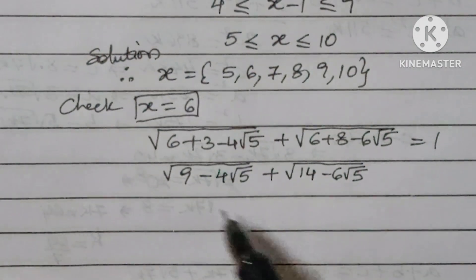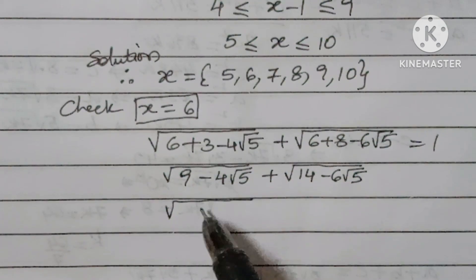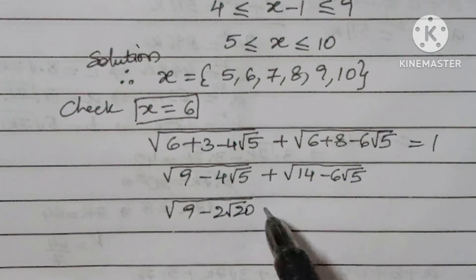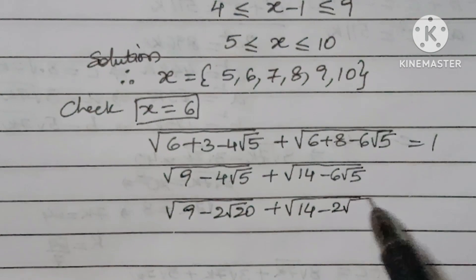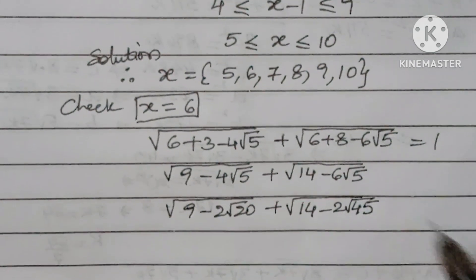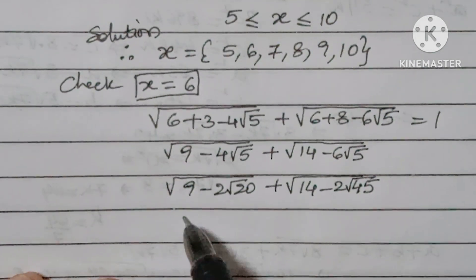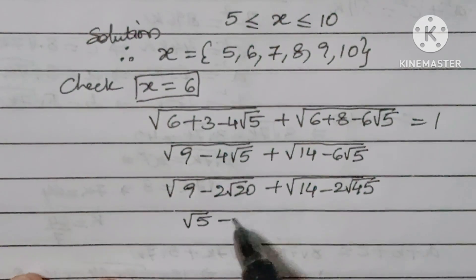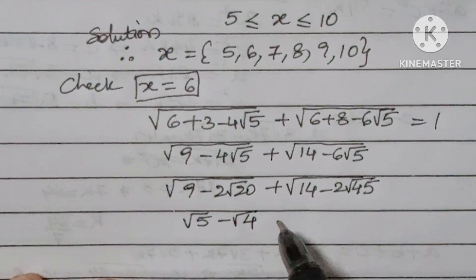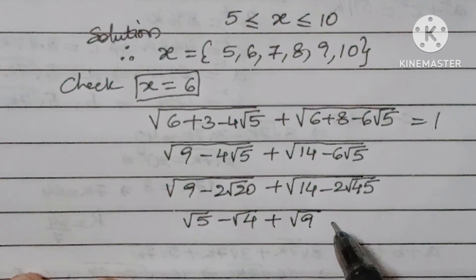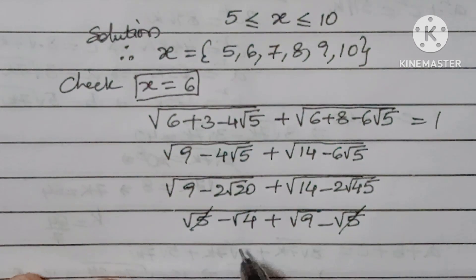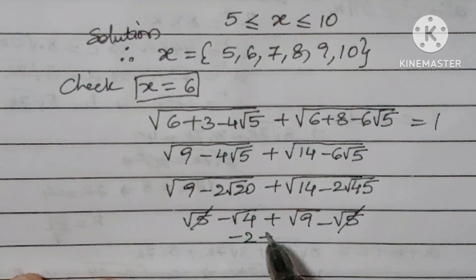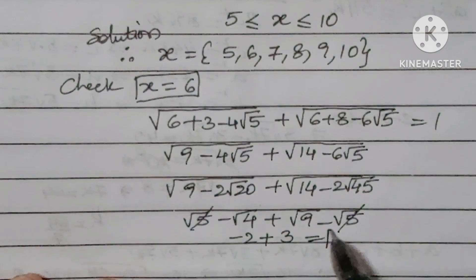Continuing the verification: this becomes |√5 - √4| + |√9 - √5|, which equals |√5 - 2| + |3 - √5|. Since √5 ≈ 2.236, the √5 terms cancel, leaving -2 + 3 = 1. This confirms the answer is correct.